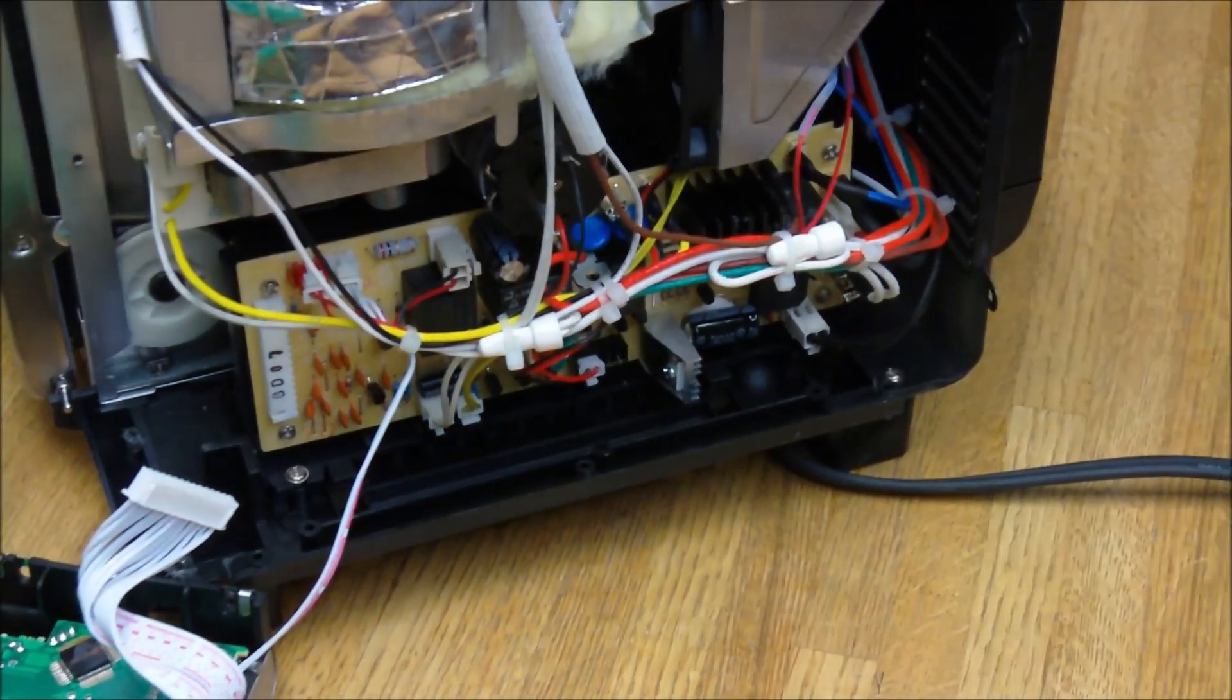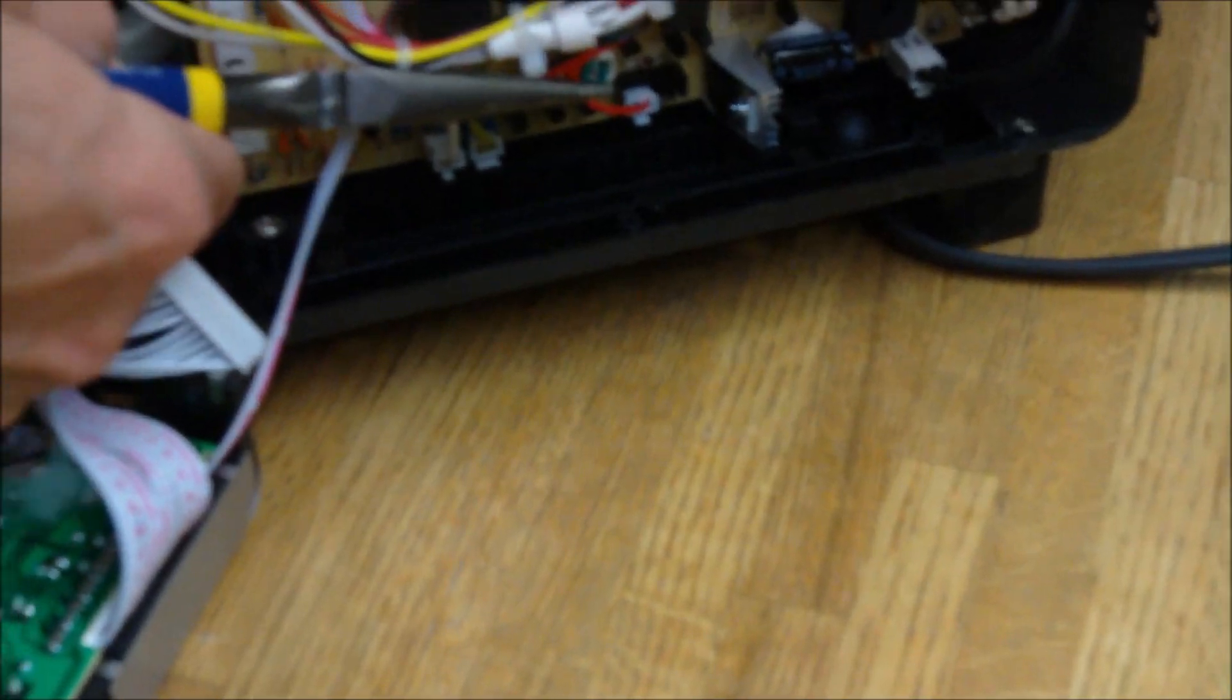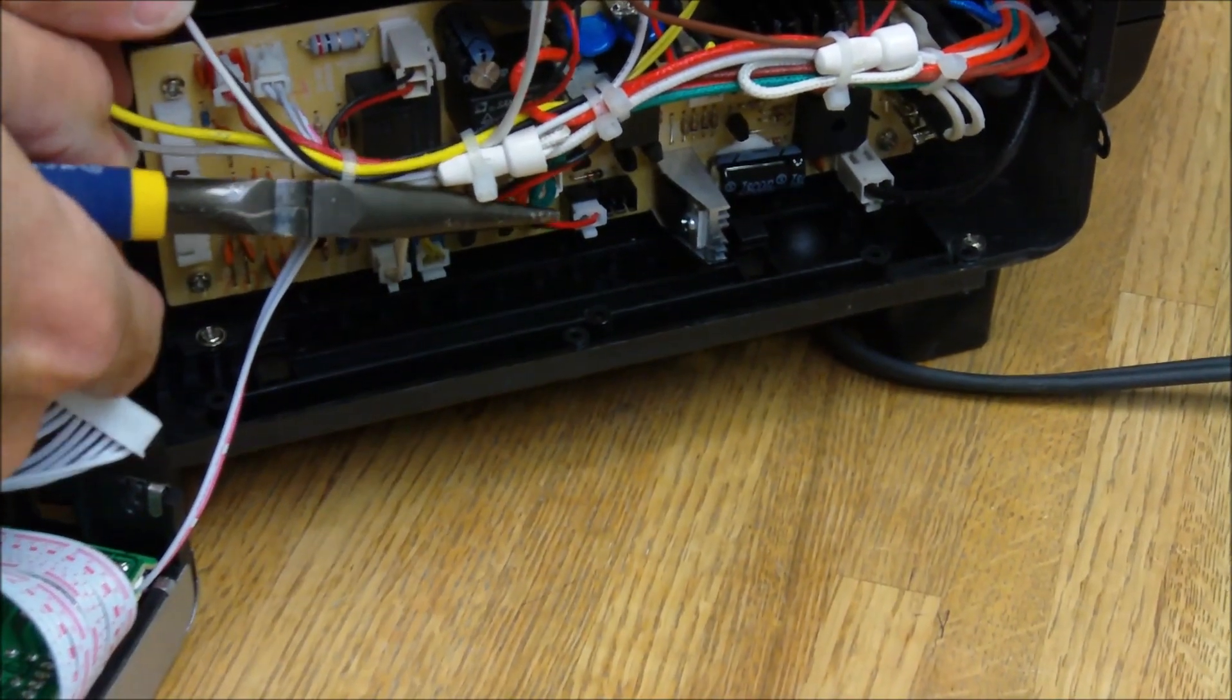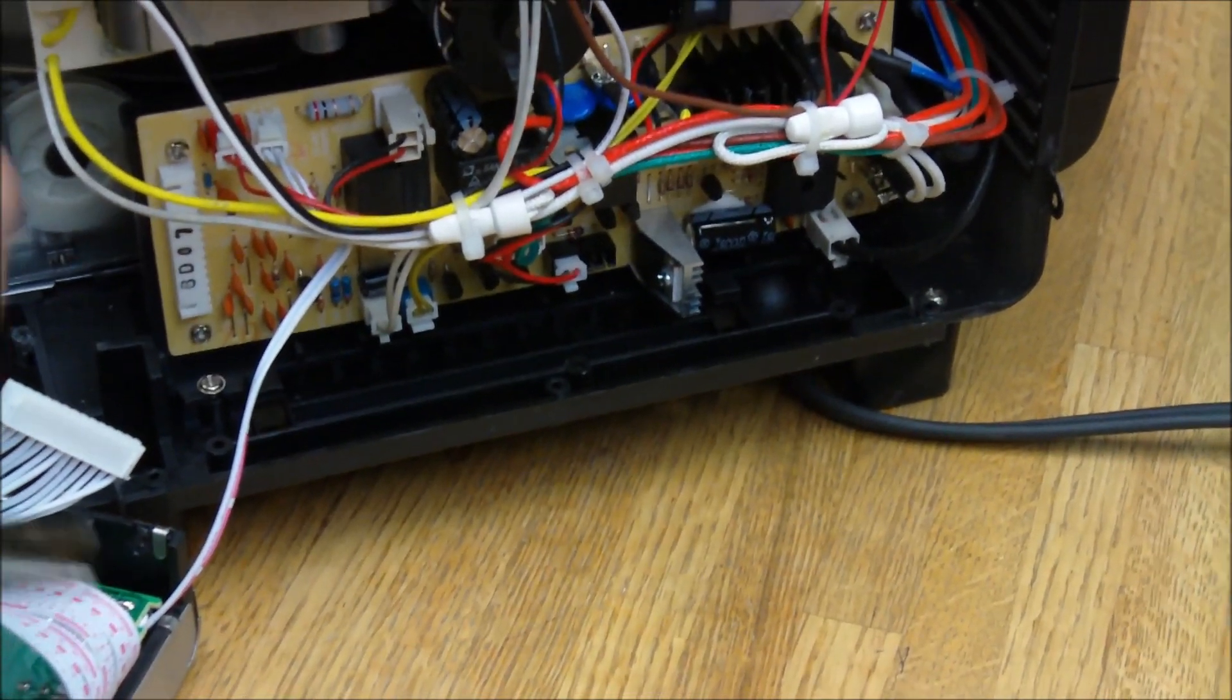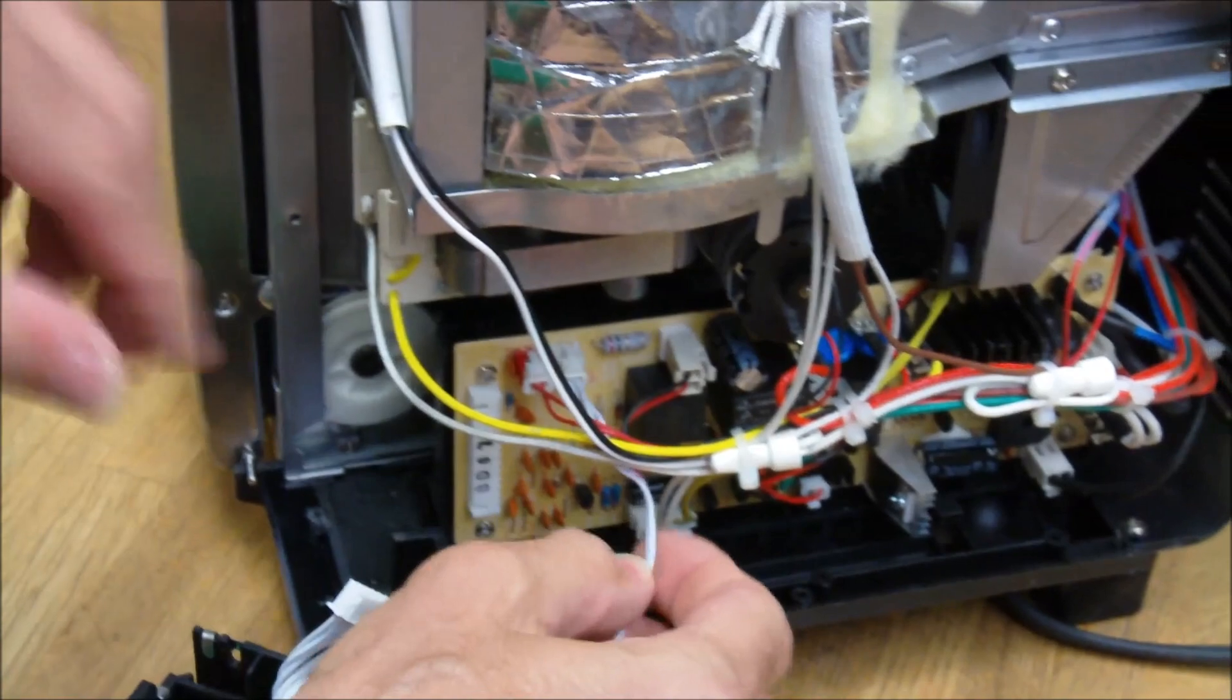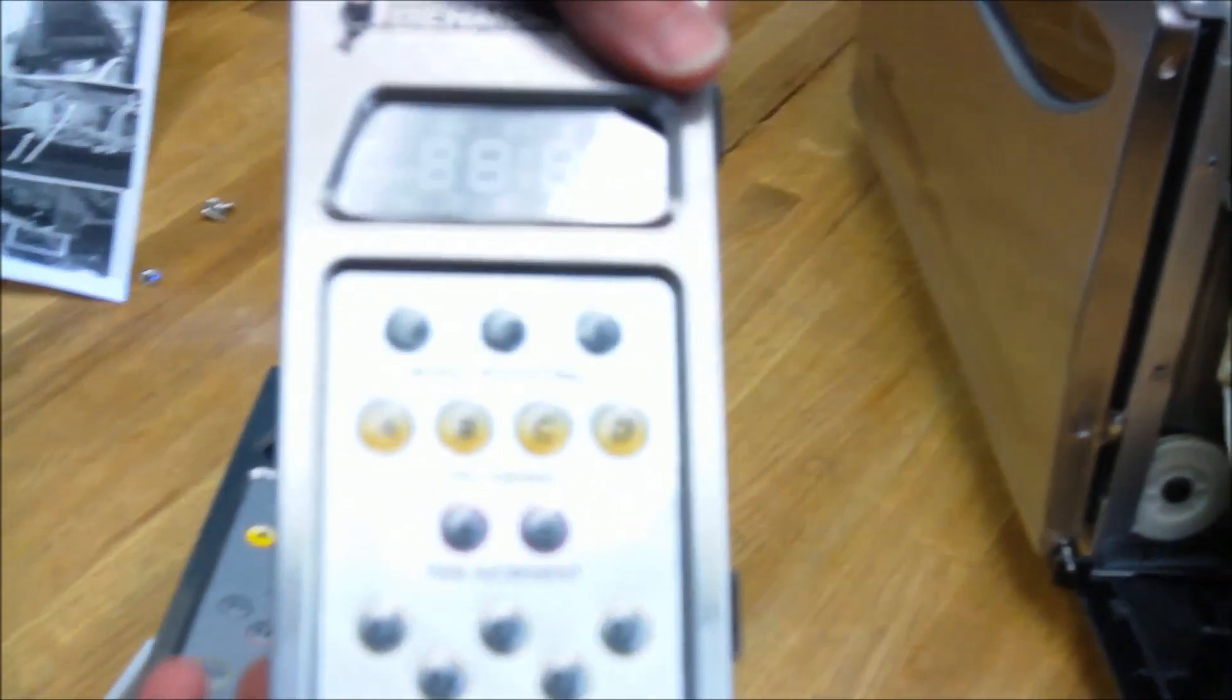And then lastly is this power connector. We're going to have to cut the, you got to be very careful not to cut any wires while you're doing this. That's off. And then you can pull this connector out and the old roaster control panel is free.